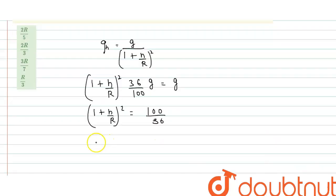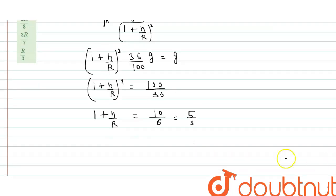Now take the square root of both sides. So 1 plus h upon r equals 10 upon 6, or you can say 5 upon 3. So h upon r is 5 upon 3 minus 1. This equals 2 upon 3.